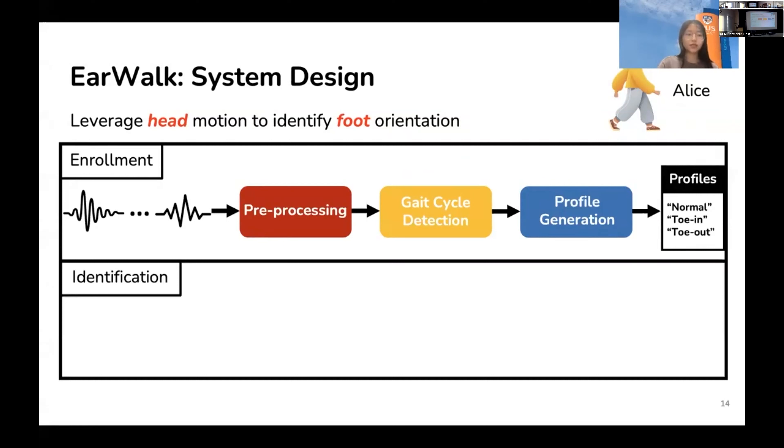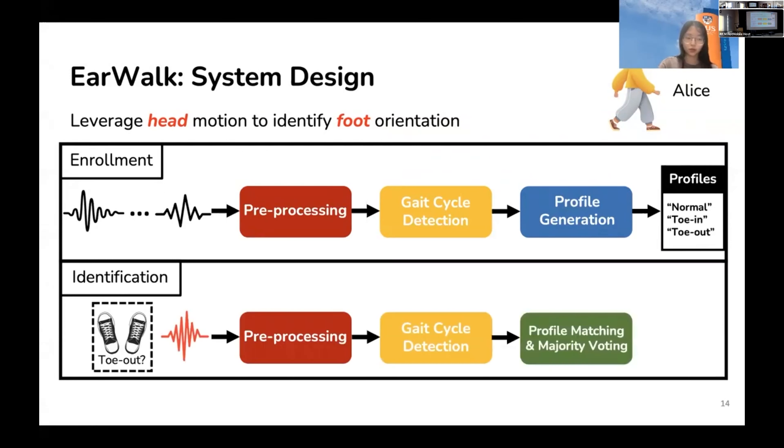After enrollment, Alice can start using our system in the identification phase. During training, EarWalk continuously captures acceleration signals, and the raw signals still go through the pre-processing and gait cycle detection module to get the signal segments, which are then compared with the stored profiles in the profile matching and majority voting module to get the final identified posture. Next, I'll introduce in detail how each module works in the enrollment phase.